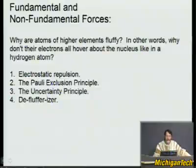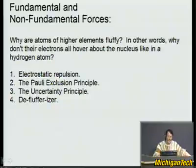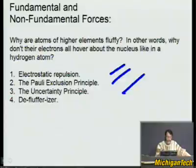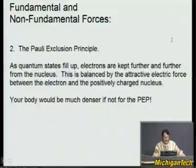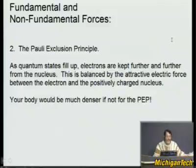Why are atoms of higher elements fluffy? Hydrogen is the lowest atom in terms of number of protons in the nucleus. We know of about 100 elements — carbon is 12. The electrons in higher elements don't all pile into the ground state like in hydrogen. Why is that? Is it electrostatic repulsion, the Pauli exclusion principle, or the uncertainty principle? The answer is the Pauli exclusion principle. As quantum states fill up, electrons are kept further and further from the nucleus, balanced by the attractive electric force. Your body would be much denser without it. It keeps atoms fluffy — most of everything is empty space.